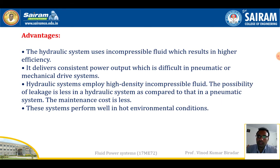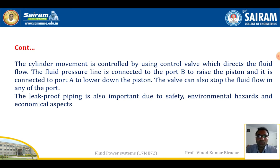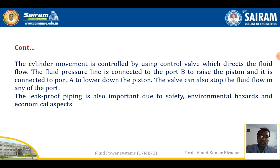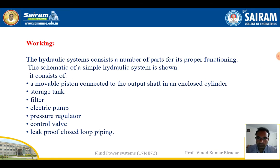The cylinder movement is controlled using the control valve, which directs fluid flow. The fluid pressure line is connected to port B to raise the piston and to port A to lower the piston. The valve can also stop the fluid flow to any port. Leak-proof piping is important for safety, environmental, and economical reasons, enabling energy transmission from one component to another in the hydraulic power system.